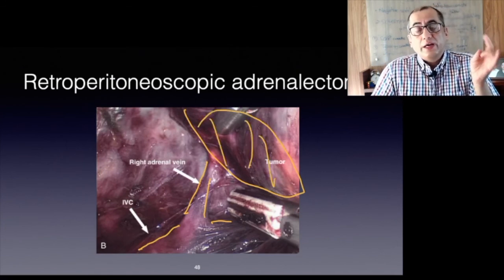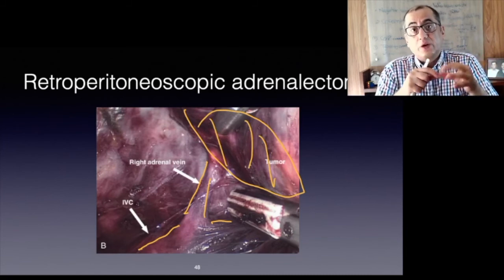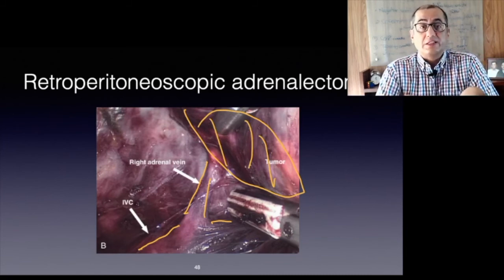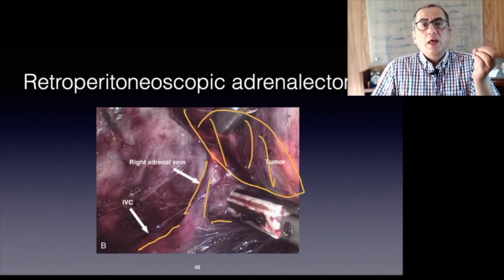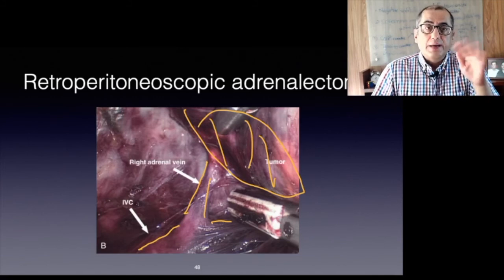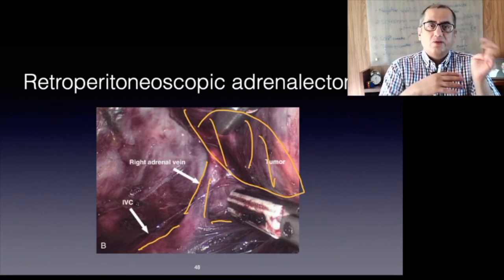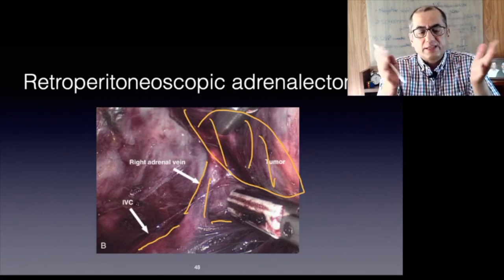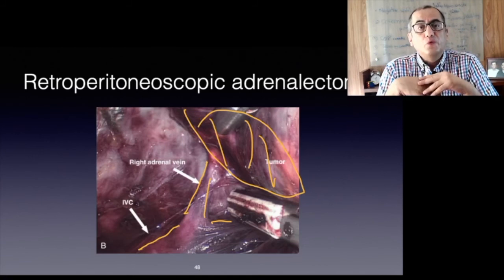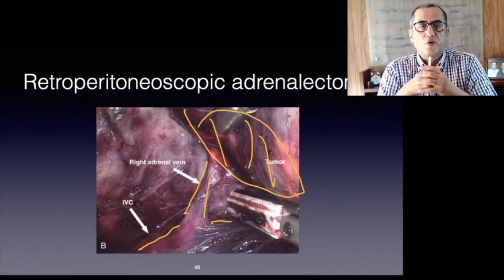High inflation pressures allow a bloodless dissection — there is no blood in this field. Effectively, the veins are being tamponated, and being outside the abdominal cavity provides an excellent view with less fogging.